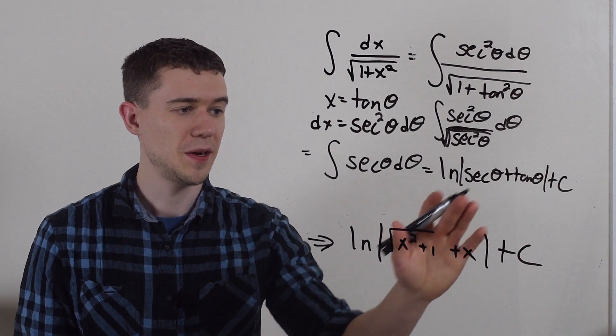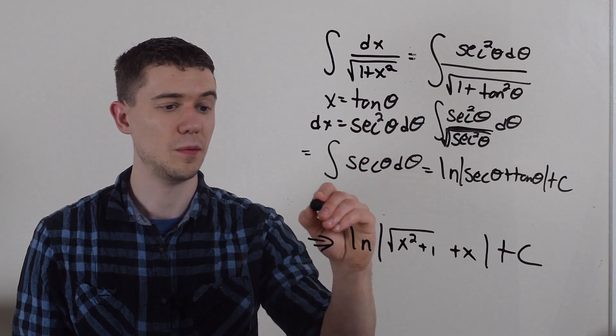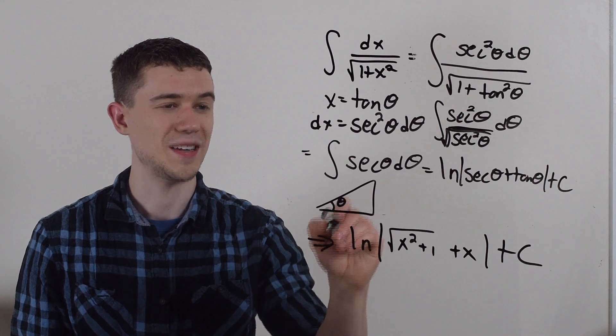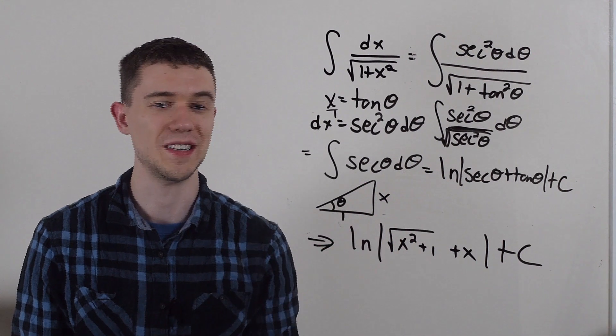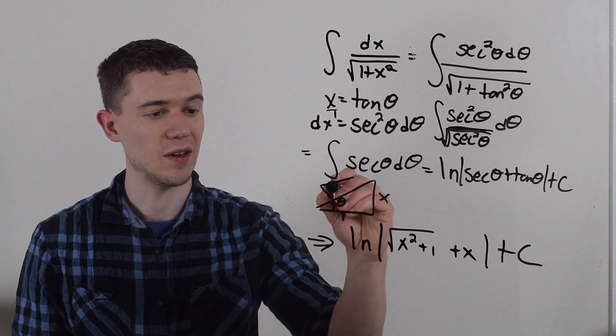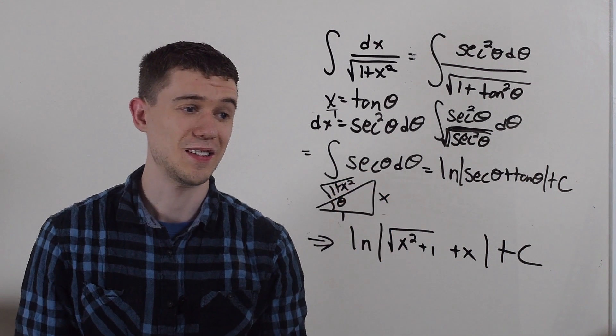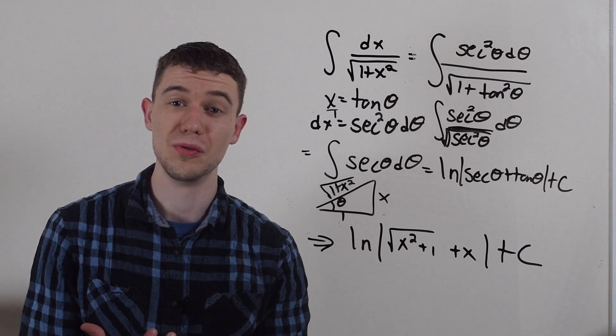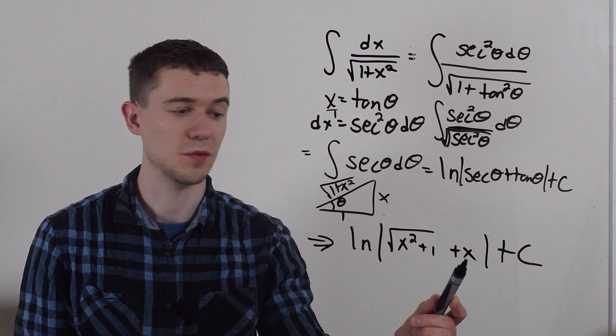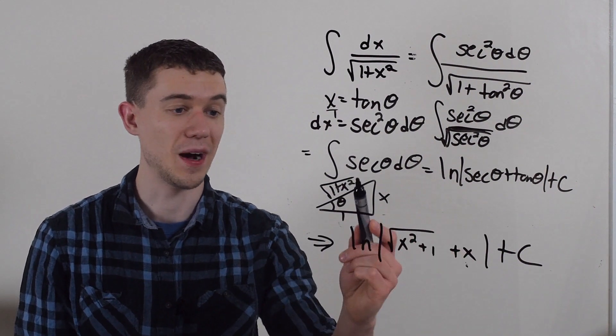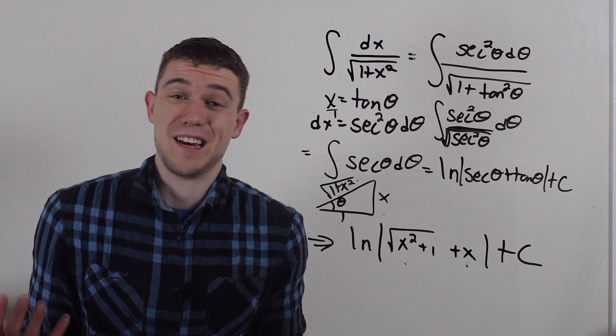And then to get from here to here we'd have to go back to our original substitution. Sometimes people will draw this triangle. So tangent of theta, that's tangent of x over 1, tangent is opposite over adjacent. And to get this side you'd have Pythagorean theorem, 1 squared plus x squared, square rooted. And you can see by doing the normal formulas for secant and tangent, tangent is x over 1, that's where this x comes from. Secant is hypotenuse over adjacent, that's where this term comes from. So you get the same answer.